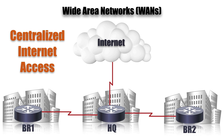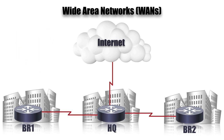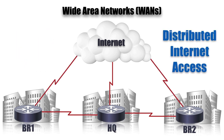The downside is that we're using more WAN bandwidth, since all that traffic has to come back to HQ over those WAN links. A different approach is distributed internet access, where we have a connection from each of our sites going directly out to the internet.